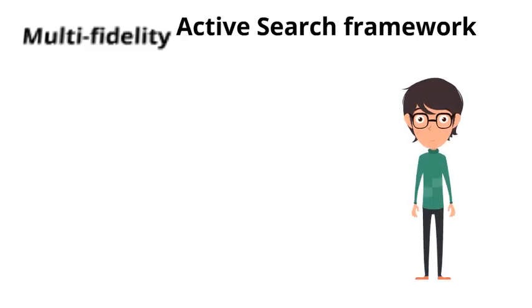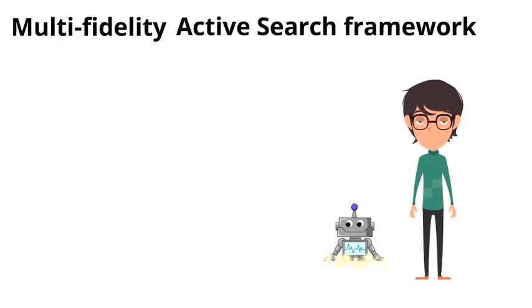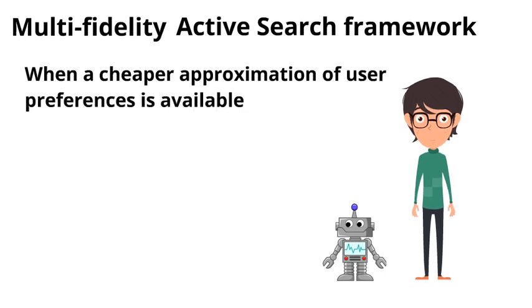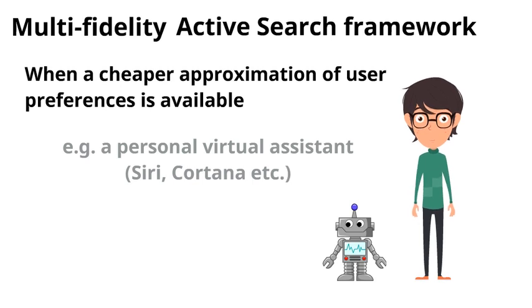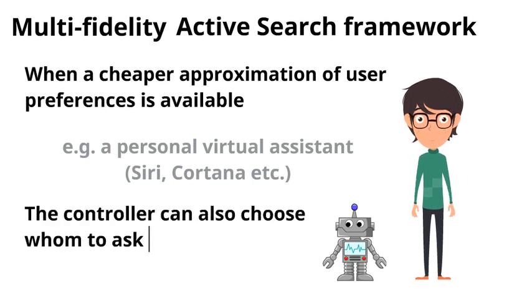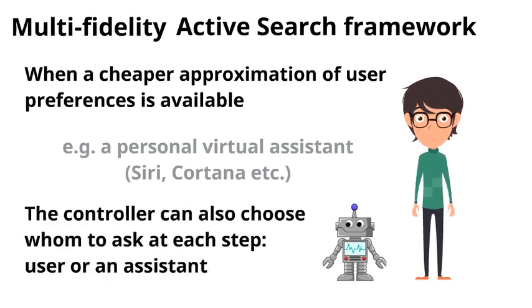Now we introduce a multi-fidelity active search framework. We assume there is an additional source with cheaper approximations of user preferences — for example, a personal virtual assistant. Now the controller at each step can decide whether the user is essential to perform item evaluation, or whether the approximate estimation would be enough.